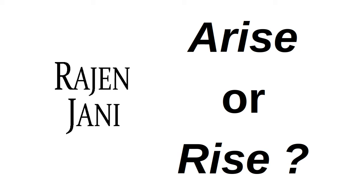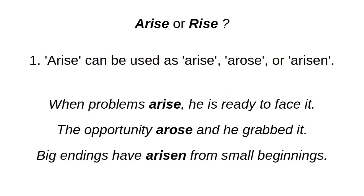Both arise and rise are irregular intransitive verbs. Arise is used with abstract nouns while rise is used with any other noun. Arise means that something occurs or something happens, whereas rise means that something goes up.